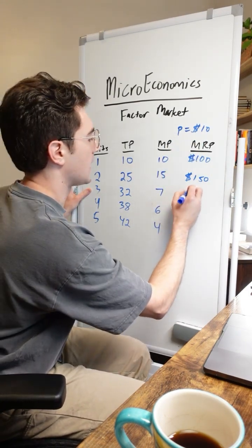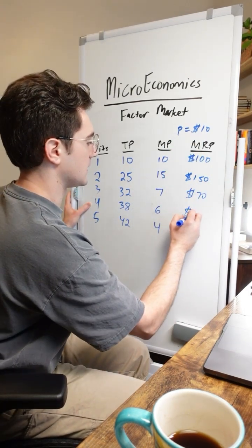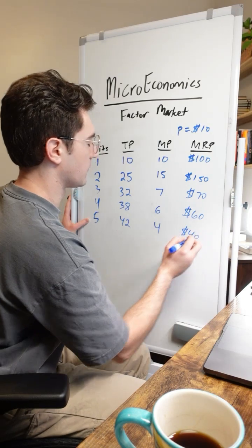This second machine added 150 bucks to our total revenue. This third one, seven times 10, added 70. Fourth, 60. And I'm sure you could guess what this last one is, 40.